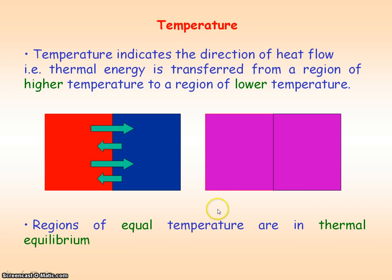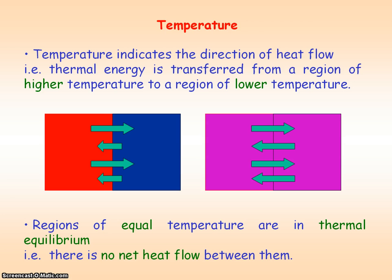If we have regions of equal temperature, then we say that these regions are in thermal equilibrium. That means there's no net heat flow between them, no net thermal energy transferred between the regions.